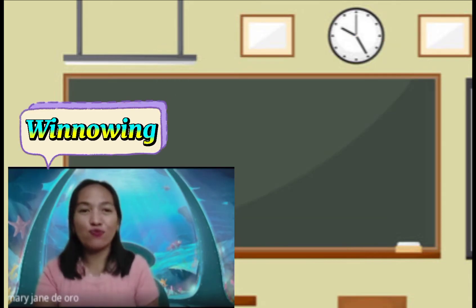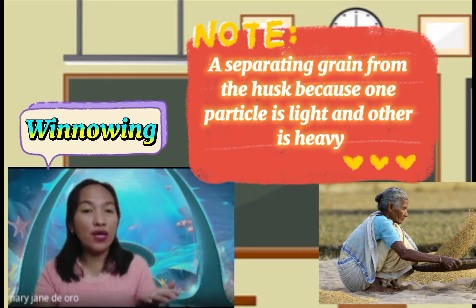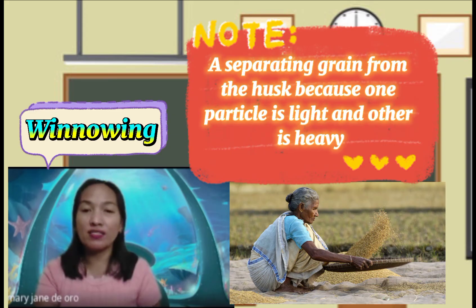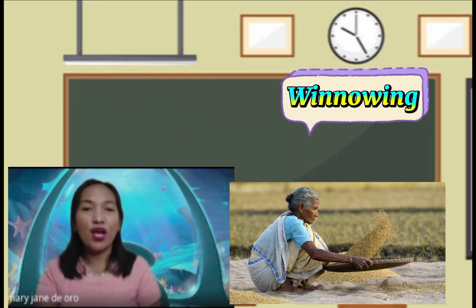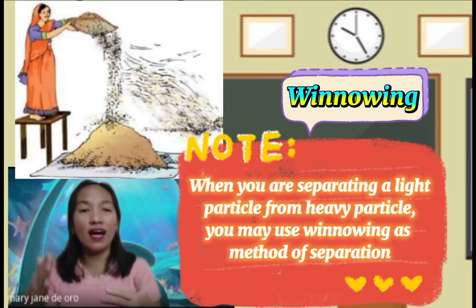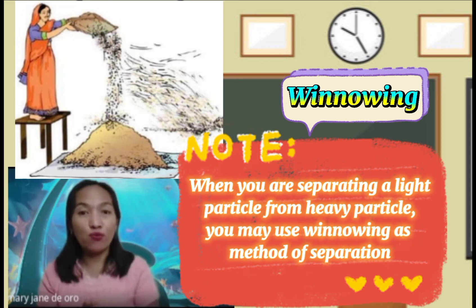Next we have winnowing. Winnowing separates the grain from the husk because one particle is light and the other is heavy. When you are separating a light particle from a heavy particle, you may use winnowing as a method of separation.